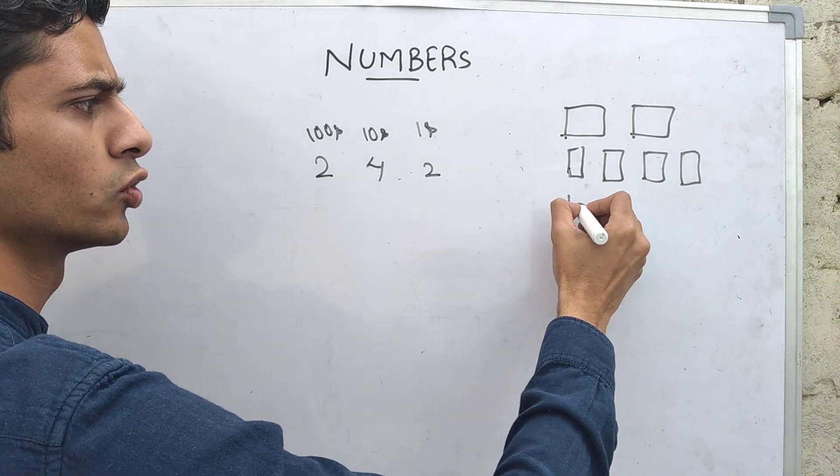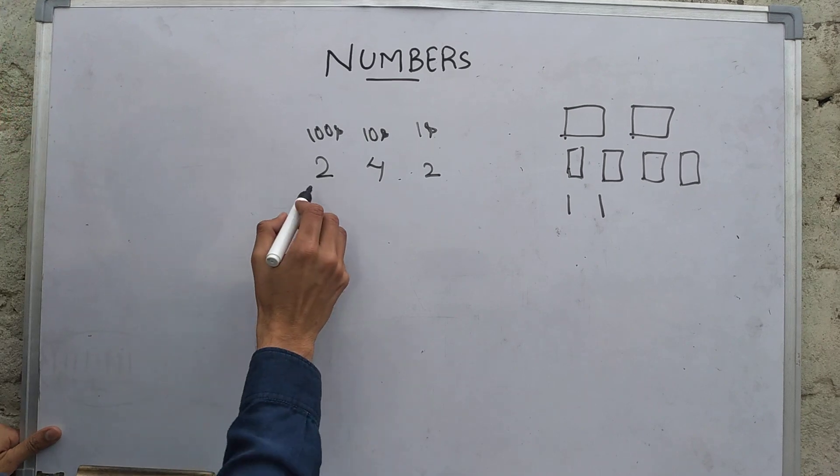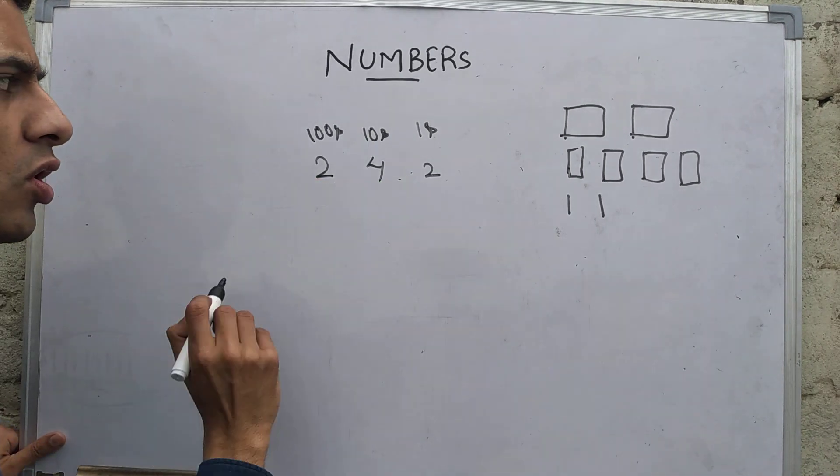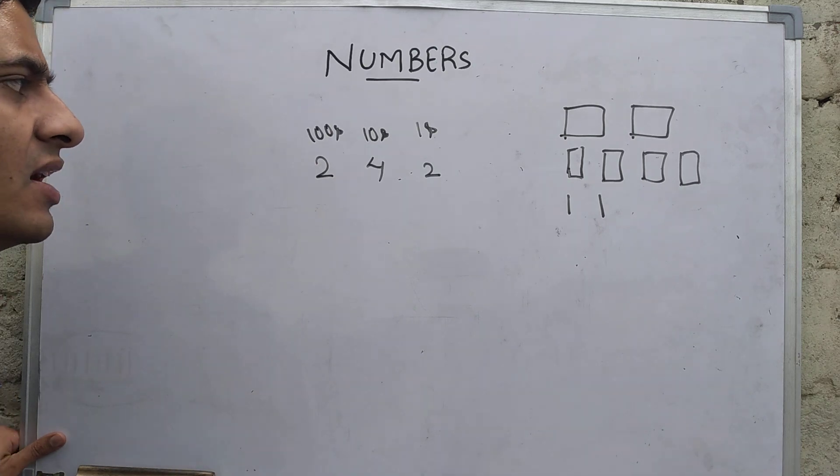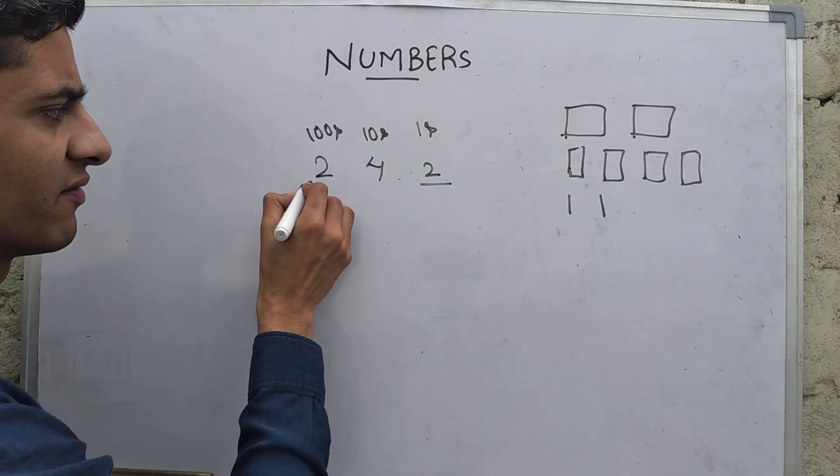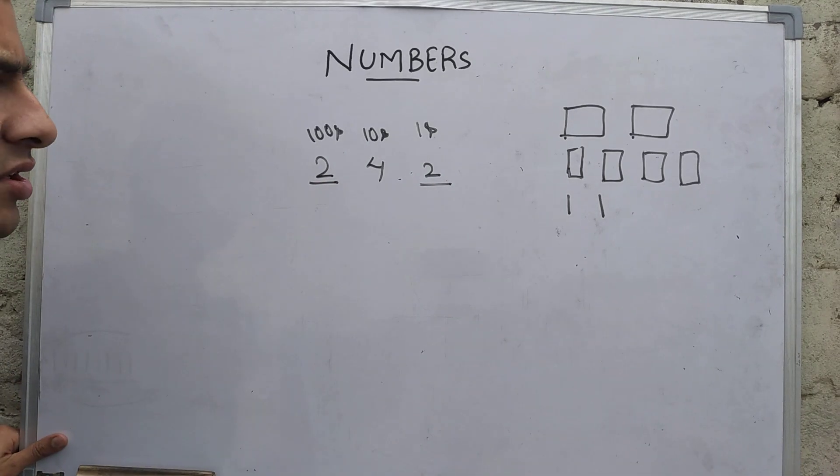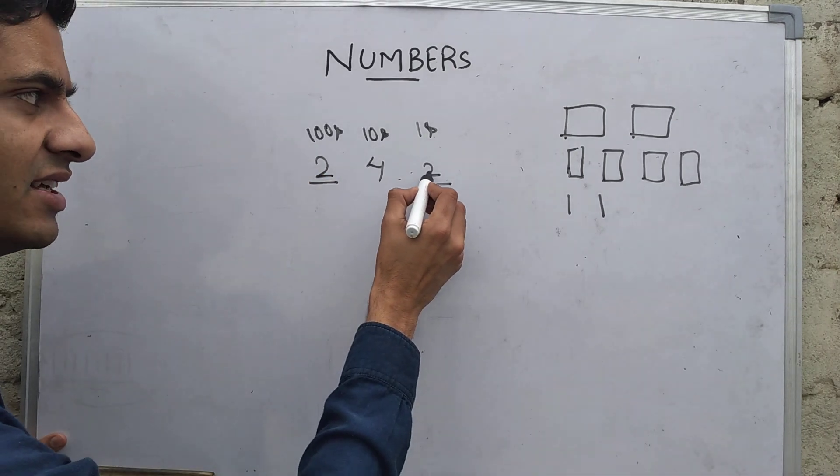Suppose I am having two hundreds, four tens, and two ones. How will I read it? You all know, okay, I'll call it 242. It is a small number. Now if someone asks you what is the place value of this two and what is the place value of this two?